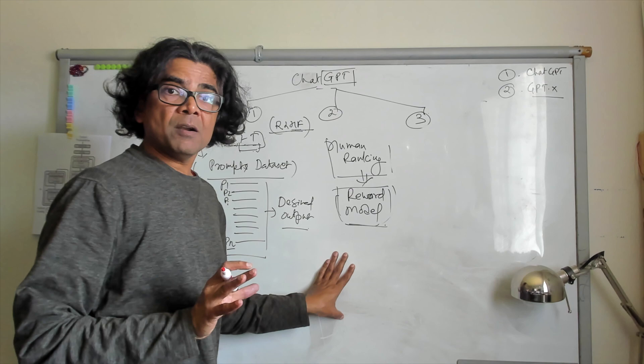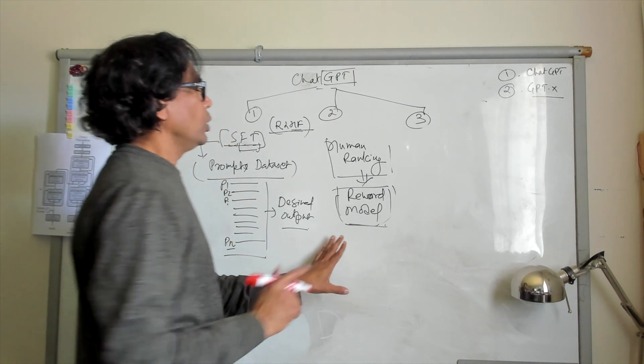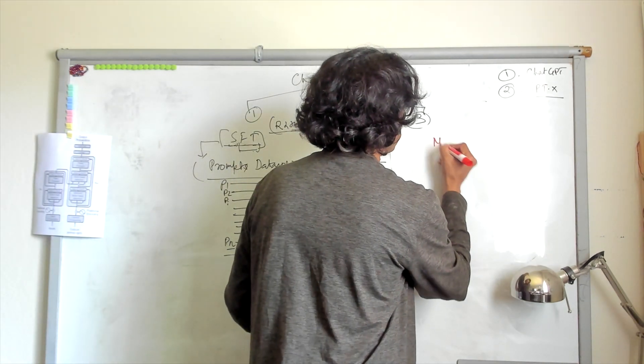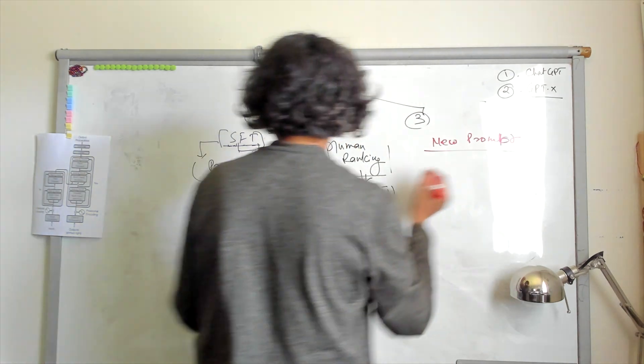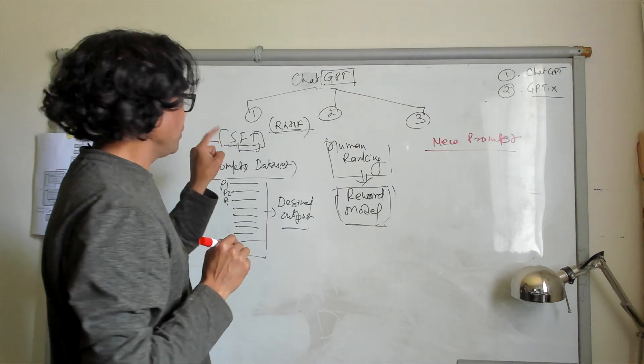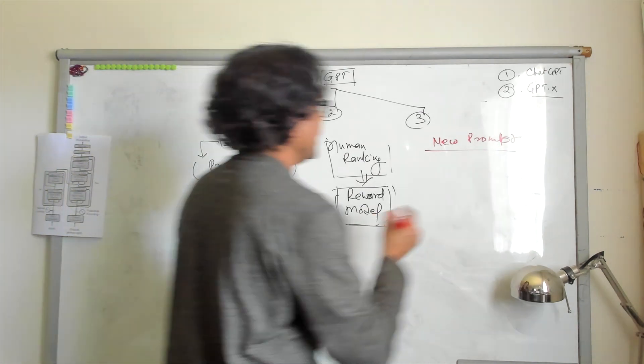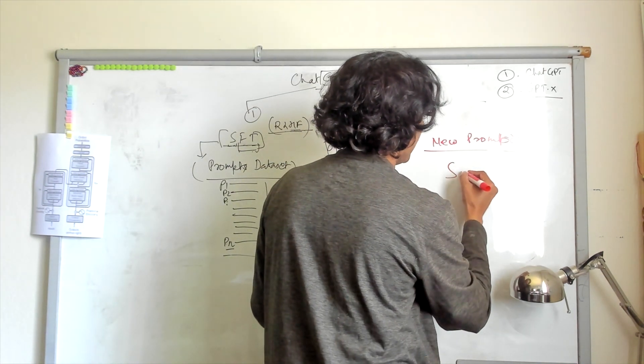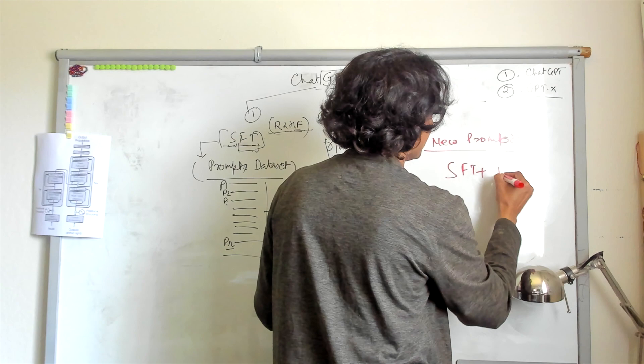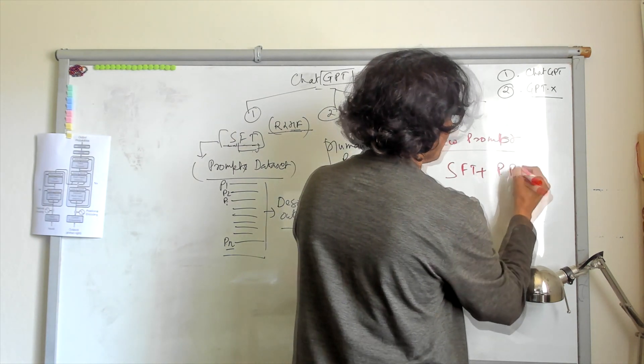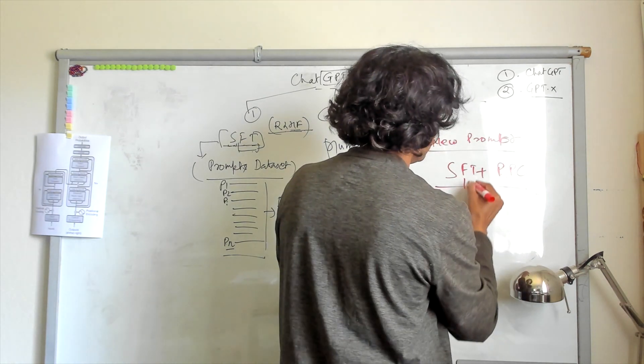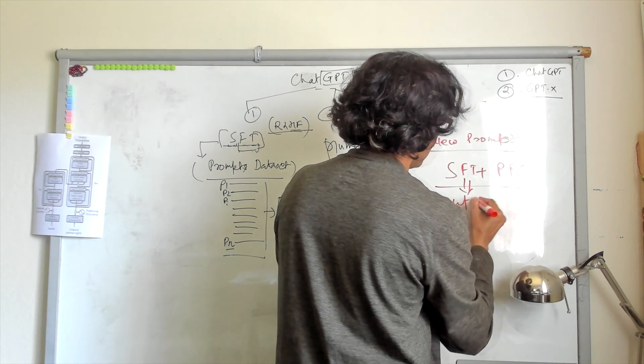In the third and last step, we take the new prompt. This new prompt is actually using the previously supervised fine-tuned training. So combining the SFT plus a method called the proximal policy optimization, PPO, the output is generated.